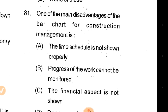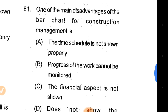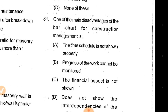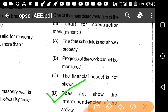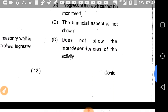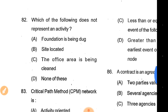Question 81: One of the main disadvantages of the bar chart for construction management is option D — it does not show the interdependence of activities.